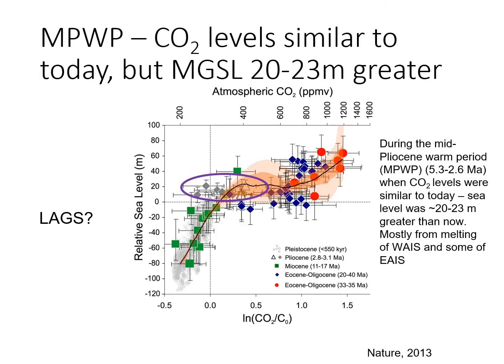The mid-Pliocene warm period occurred 5.3 to 2.6 million years ago, when carbon dioxide concentrations in the atmosphere were similar to what they are today. This plot shows atmospheric CO2 concentrations on the x-axis and sea level on the y-axis, with different colored symbols indicating different geologic periods. Points for the Pliocene are represented by grey diamonds, with CO2 concentrations of about 280 to 400 parts per million — very similar to today. Despite similar CO2 concentrations, sea levels were 20 to 23 meters greater than today, mostly the result of melting of Antarctic glacier ice.